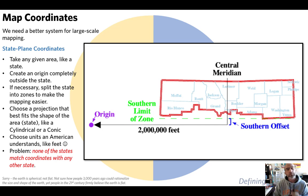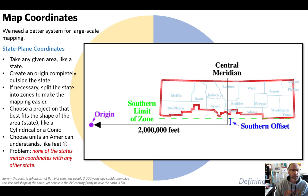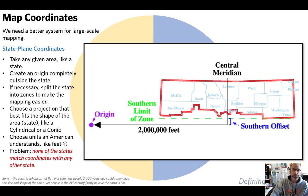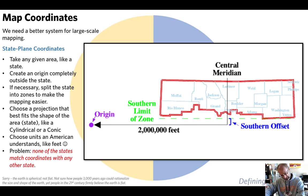One drawback to state plane coordinates is that the coordinate system restarts with each zone. The north zone and south zone use the same coordinate values, so data from each zone can overlay on top of each other, making it hard to combine data across zones. Each state also has its own system, which can get messy quickly.